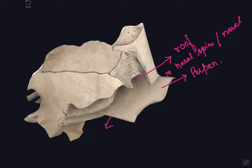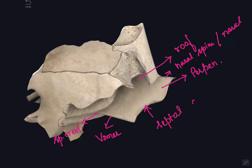The posterior border of the perpendicular plate has an upper part that articulates with the sphenoidal crest, and a lower part that articulates with the vomer bone. The inferior border of the perpendicular plate receives the attachment of the septal cartilage of the nose.